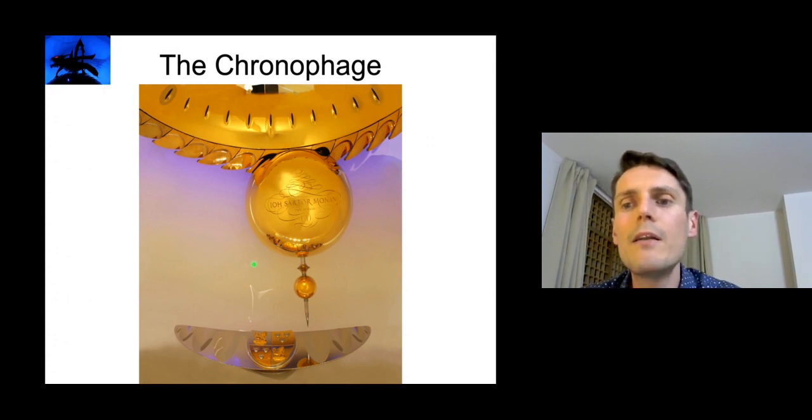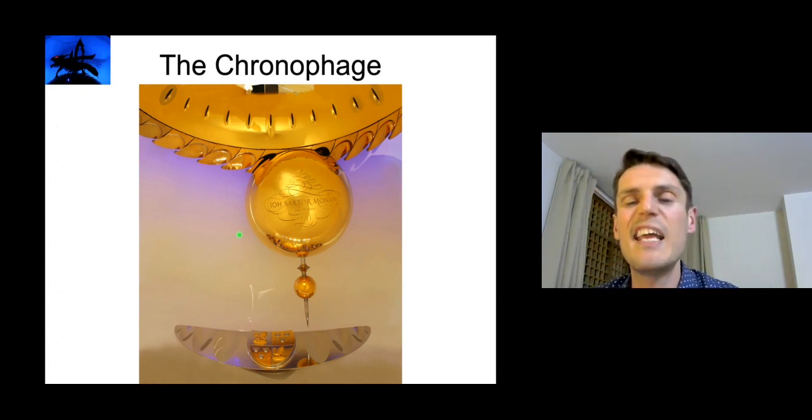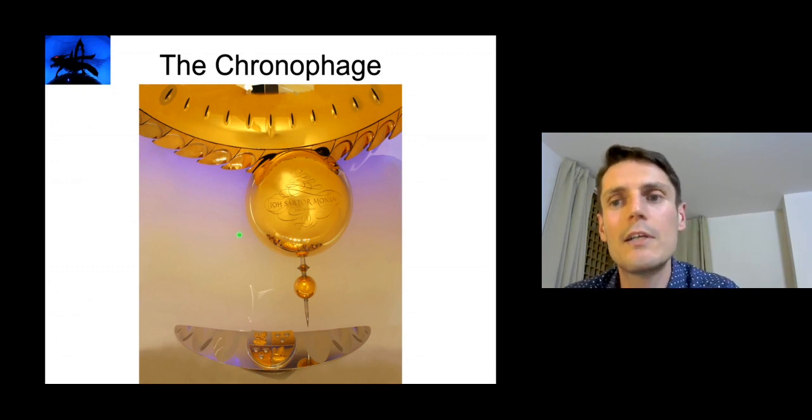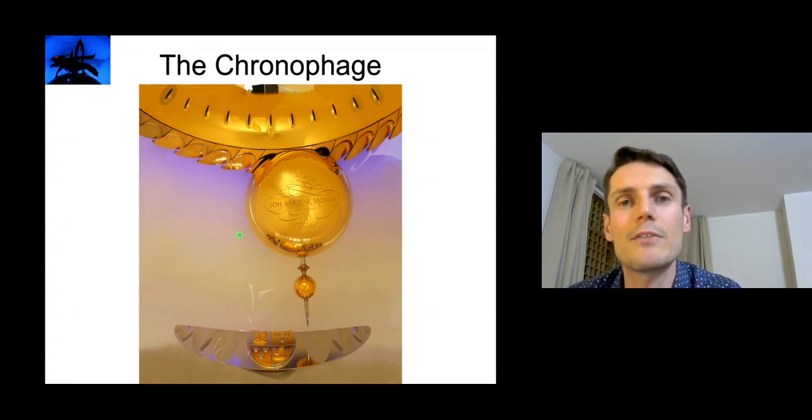We can also zoom in on the pendulum and observe some writing. We've got J-O-H dot, Sartor, Monan, Inv, and some Roman numerals. So J-O-H is short for Johannes, John. Sartor for Taylor, as in clothing. Monan is short for Monanensis, the Latin for Isle of Man. Inv is short for Invenit, the verb for something to bring something to fruition. And the Roman numerals spell out 2008.